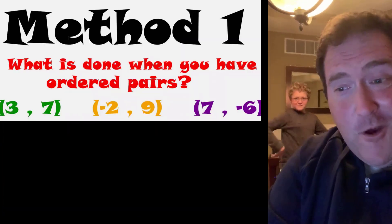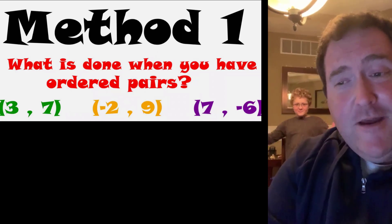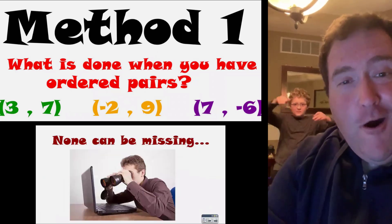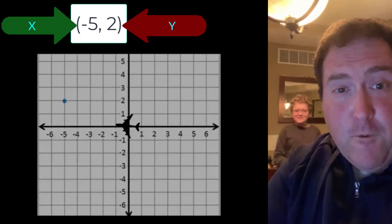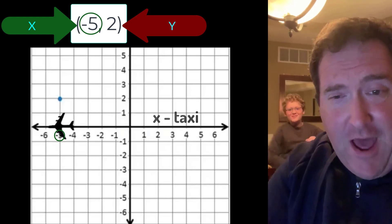Mr. David, would you please explain? Method one, what is done when you have ordered pairs? None can be missing, all must be there. Each ordered pair is the X and the Y. Always taxi before you fly.